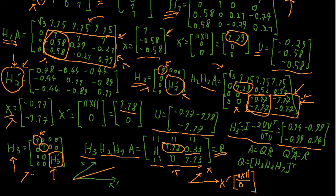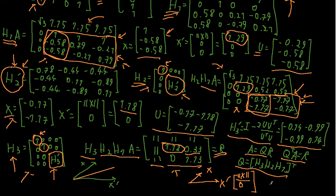Remember that A = QR and that Q-transpose times A equals R, because Q is orthogonal so its transpose is its inverse. To find Q, you take the transpose of H1·H2·H3. By the rule for transposes of products, this equals H3-transpose times H2-transpose times H1-transpose — reading from right to left.